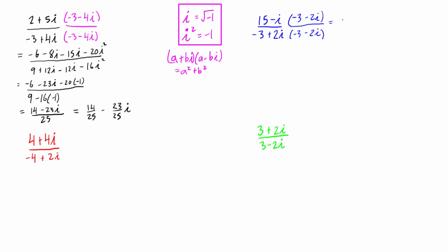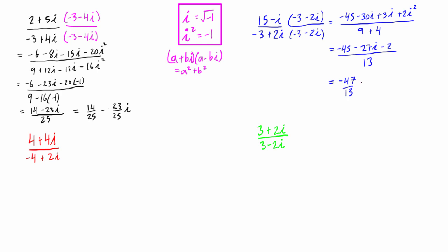The top simplifies: fifteen times negative three is negative forty-five, then fifteen times negative two i is minus thirty i, then we have plus three i, and then plus two i squared. The bottom we can skip straight to a squared plus b squared, which gives us nine plus four. This reduces further: we have negative forty-five minus twenty-seven i, and the two i squared becomes minus two, since that's plus two times negative one. All over thirteen. In complex number form, that is negative forty-seven over thirteen, minus twenty-seven over thirteen times i.